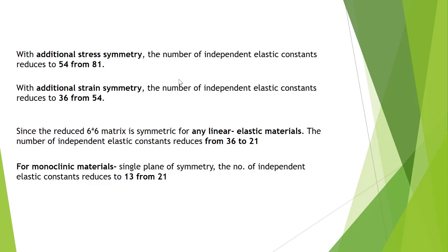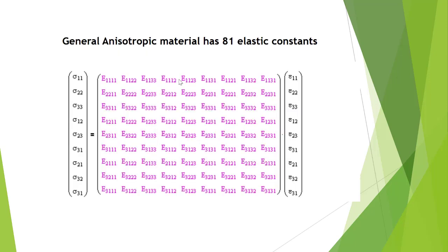Further, if we incorporate strain symmetry, it reduces from 54 to 36. We know what this 36 is—it's actually the number of elements in a 6 by 6 matrix. The 9 by 9 matrix reduces to 6 by 6 by the introduction of strain and stress symmetry.